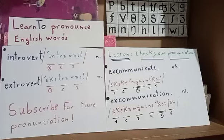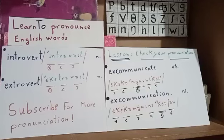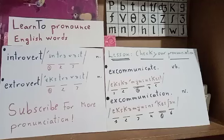The next set: 'excommunicate' and 'excommunication.' The verb is 'excommunicate' — a five-syllable word with stress on the third syllable: ex-com-mu-ni-cate. The noun is 'excommunication' — it becomes a six-syllable word and the stress shifts to syllable number five: ex-com-mu-ni-ca-tion.